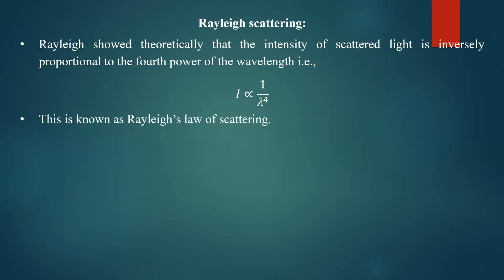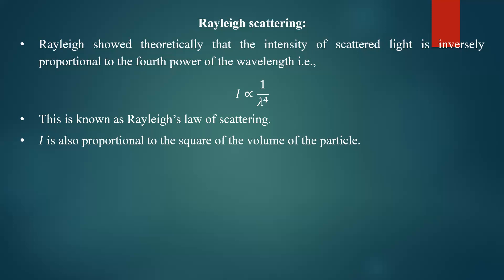This particular dependency of the intensity of scattered light on wavelength is called Rayleigh's law of scattering. Another point: intensity is also proportional to the square of the volume of the particle. The intensity of scattered light depends on the size of the particle, and it is directly proportional to V squared — it depends on volume squared.